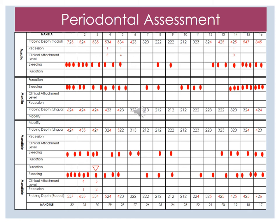Here we have Kim's periodontal assessment. She does present with general bleeding throughout the dentition. She has localized areas of 5 to 8 millimeter pockets in the posterior region for the molars. She presents with 4s and 5s in the premolar area and a general 2 to 3 in the anterior areas of the dentition. On number 4, she has a clinical attachment of 3, and on number 5, a clinical attachment of 4.